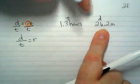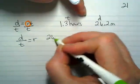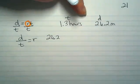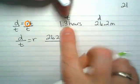Do we have his distance? We do. We can write it in. 26.2 divided by the time, which is?